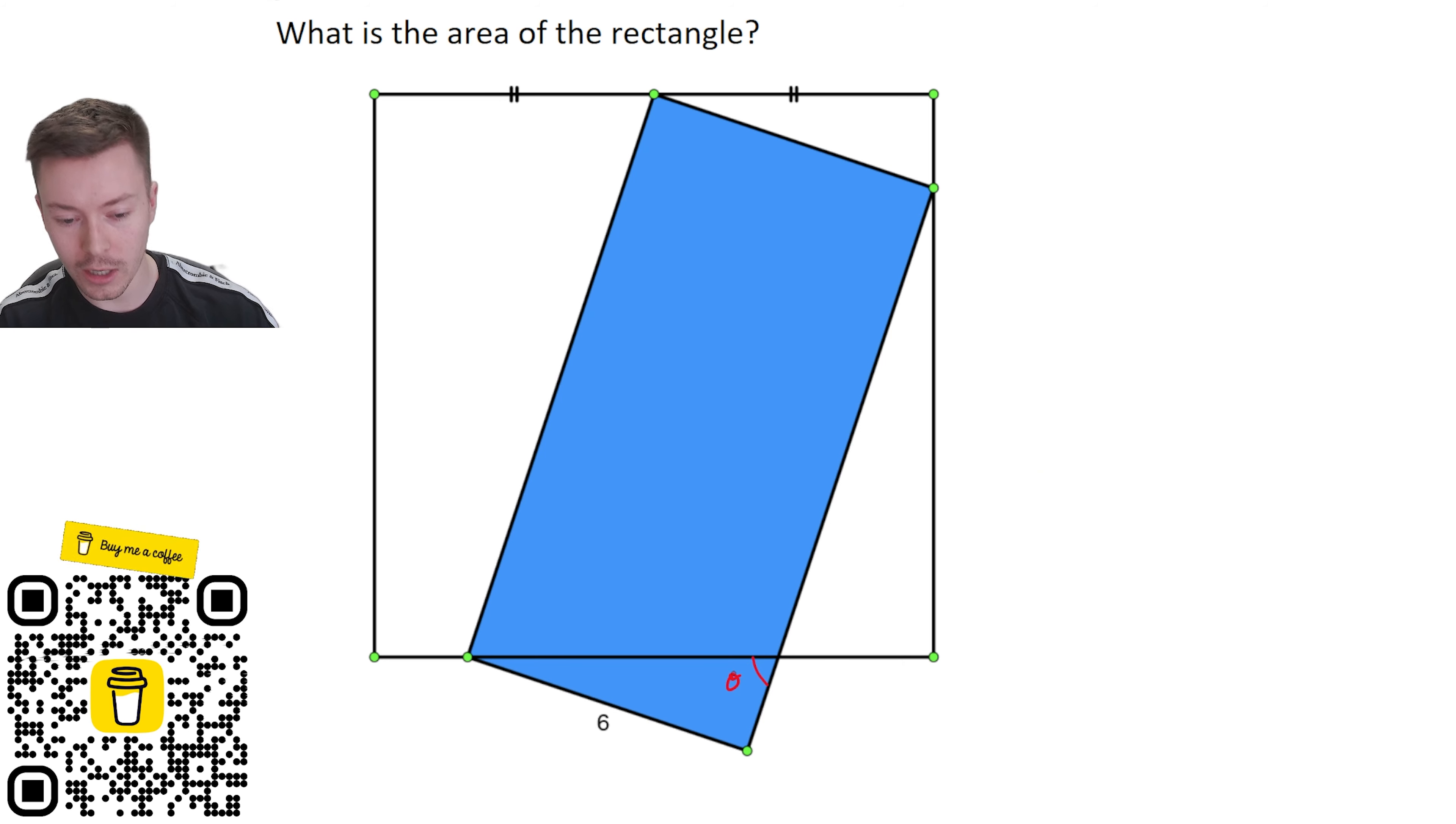So label one of the sides down the bottom here theta, and you can label it something else if you want. But I did notice as I was working through that we've got some triangles around this rectangle naturally, and I was wondering maybe if some of those were related somehow if that could be used some way.